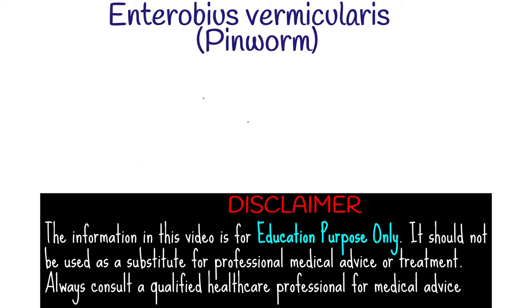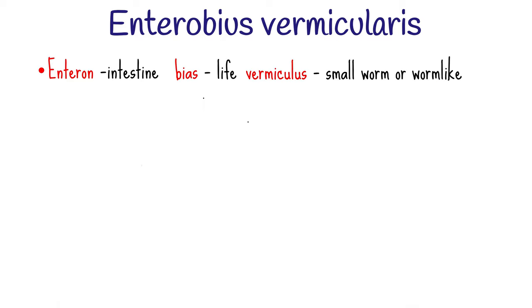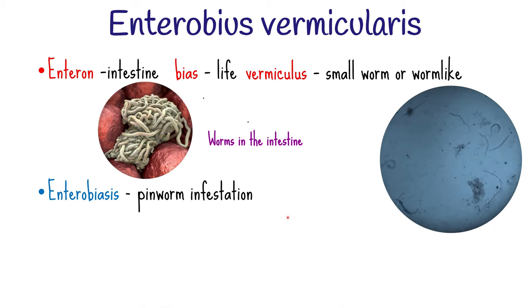Hi everyone and welcome to today's session. Today we are going to look at a very common intestinal parasite called Enterobius vermicularis, which is known by the common name pinworm or threadworm. The word enterin is from Greek meaning intestine, and bias refers to life, while vermiculus is a Latin word that means a small worm or worm-like. The name Enterobius vermicularis refers to tiny worms living in the intestine, while Enterobiasis is the medical condition associated with pinworm infestation.